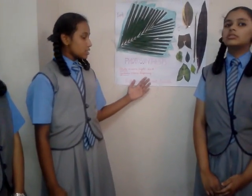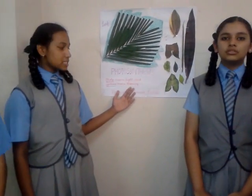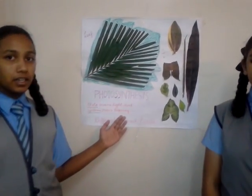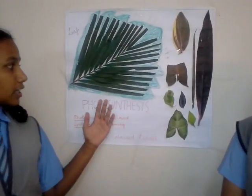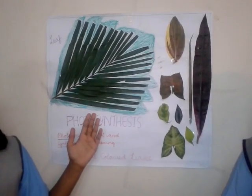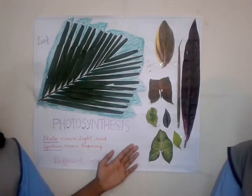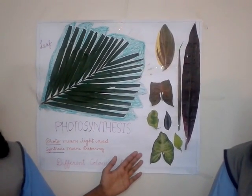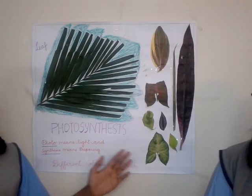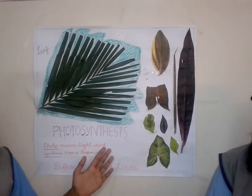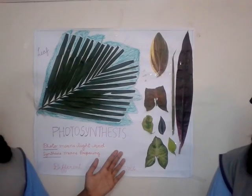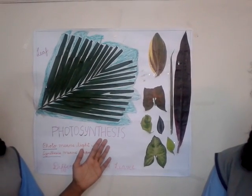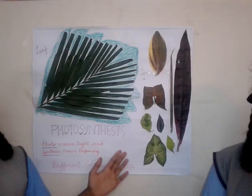Photosynthesis — photo means light and synthesis means preparing. Green colored plants have green colored pigment and different colored leaves have different colored pigment. Though they have different colored pigment, chlorophyll is present in the leaves.